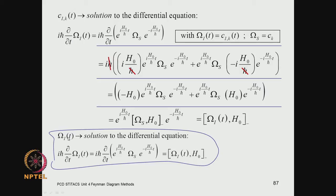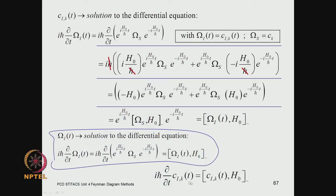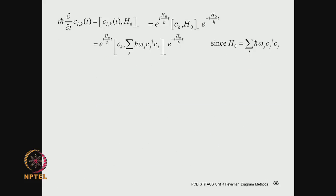H0 commutes with e^(iH0/h-bar) and e^(-iH0/h-bar), so rearranging these terms you find you have the commutator of the Schrödinger picture operator with the unperturbed Hamiltonian, sandwiched between the transformation operators. This is nothing but Omega_I(t) — the interaction picture operator corresponding to the Schrödinger picture operator Omega_S. To get Omega_I you solve: the time derivative of Omega_I equals the commutator of Omega_I with H0. This is valid for any operator Omega, and therefore also for the destruction operator.